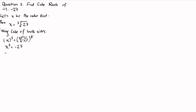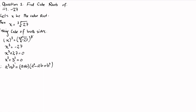Taking 27 to the left hand side, we have x cubed plus 27 is equal to 0. Now 27 can be written as 3 cubed. According to the formula a cubed plus b cubed is equal to a plus b, into a squared minus ab plus b squared, we can expand x cubed plus 3 cubed using this formula.